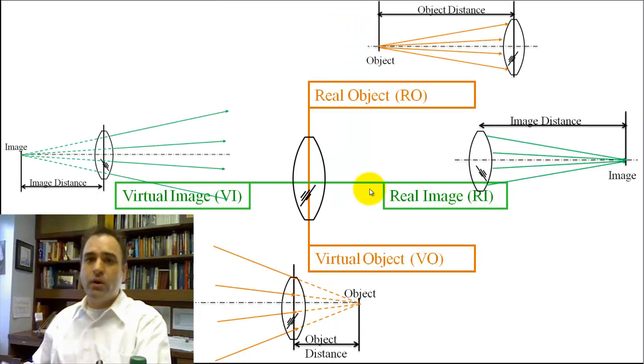Now we have a coordinate system. And again, just to hammer home, repetition here helps us learn. Object, real object up top, virtual object down below. Real image to the right, virtual image to the left.